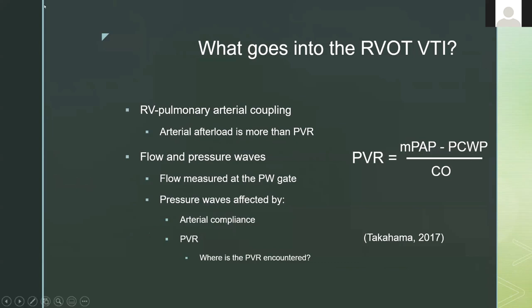The waveforms give us a lot of information about right ventricle and pulmonary arterial coupling. The concept is that your arterial circuit has a certain amount of elastance, and you'd like the end-systolic elastance of the ventricle to approximately equal the elastance of the arterial pipes. If the RV is not performing well — with decreased elastance during systole — or you have pulmonary hypertension and afterloading of the right ventricle, it's going to show up on the right ventricular outflow tract velocity time integral.